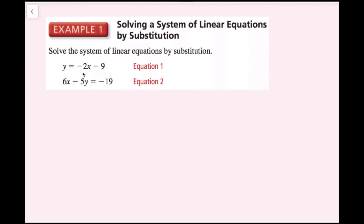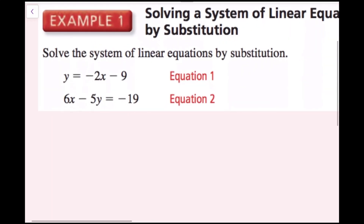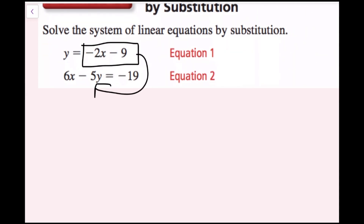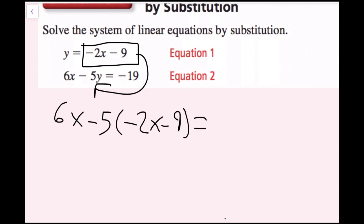This y and this y are the same because we want to figure out what ordered pair is contained in both of these equations. Since this y is equal to negative 2x minus 9, this y is also equal to negative 2x minus 9, so I can plug this in for y. Whenever I'm plugging in an expression or a negative number, I need to use parentheses. So I'm going to rewrite this as 6x minus 5 times the quantity negative 2x minus 9, and that is all equal to negative 19.